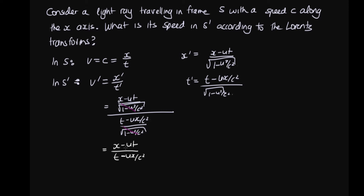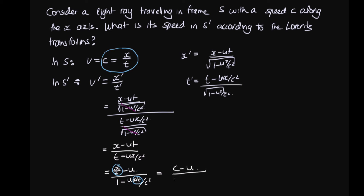Now I'll divide the top and the bottom through by T. This gives us (X over T minus U) divided by (1 minus Ux over TC squared). We can now replace X over T with C, since we established that X over T equals C in frame S. So this becomes (C minus U) over (1 minus UC over C squared).